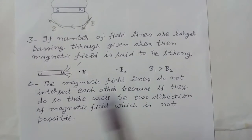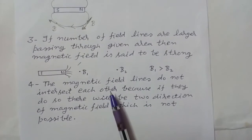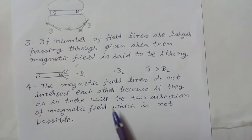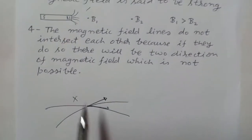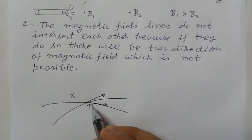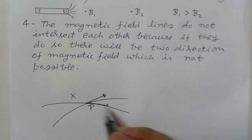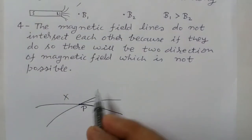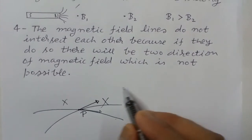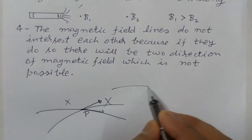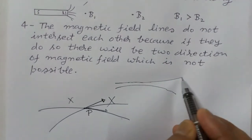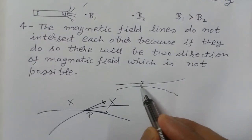The magnetic field lines do not intersect each other. Because if they did, there would be two directions of magnetic field at that point, which is not possible. Suppose a field line intersects — at that point P there would be two directions of magnetic field, which is not possible, so this diagram would be wrong. Magnetic field lines can pass very close to each other but they cannot intersect.